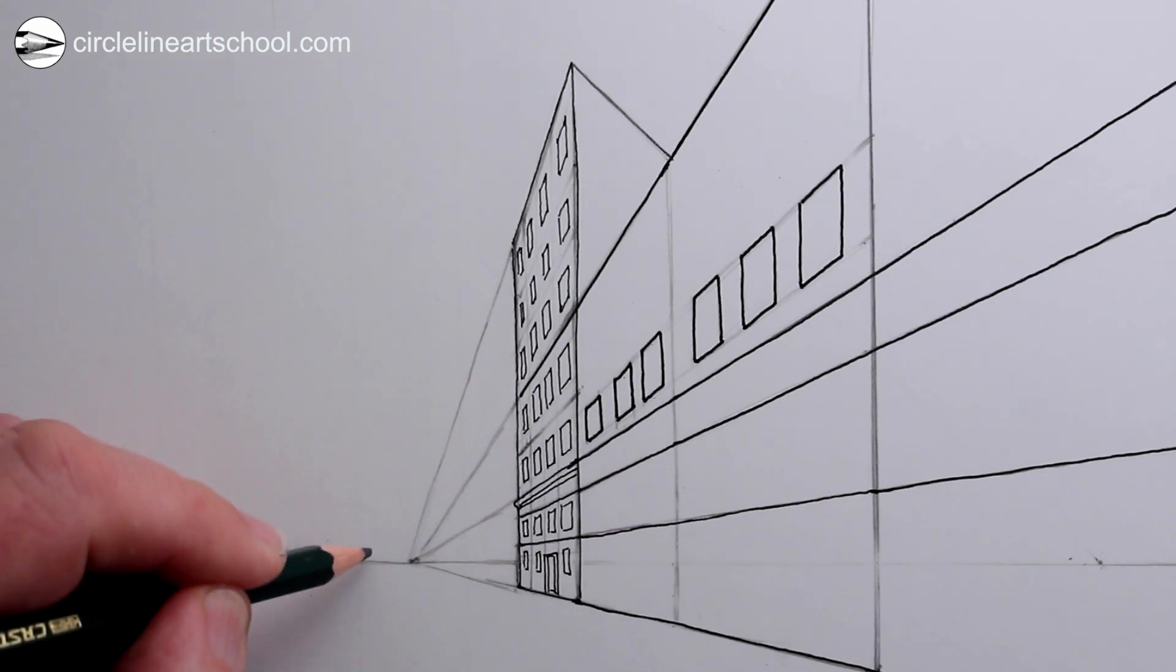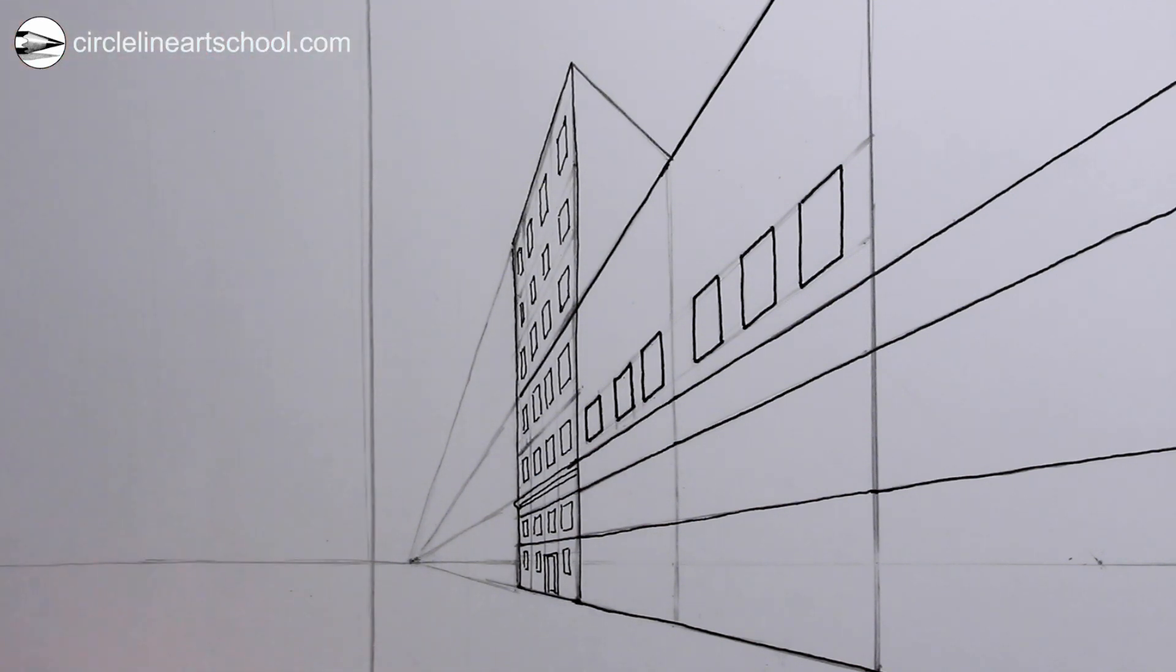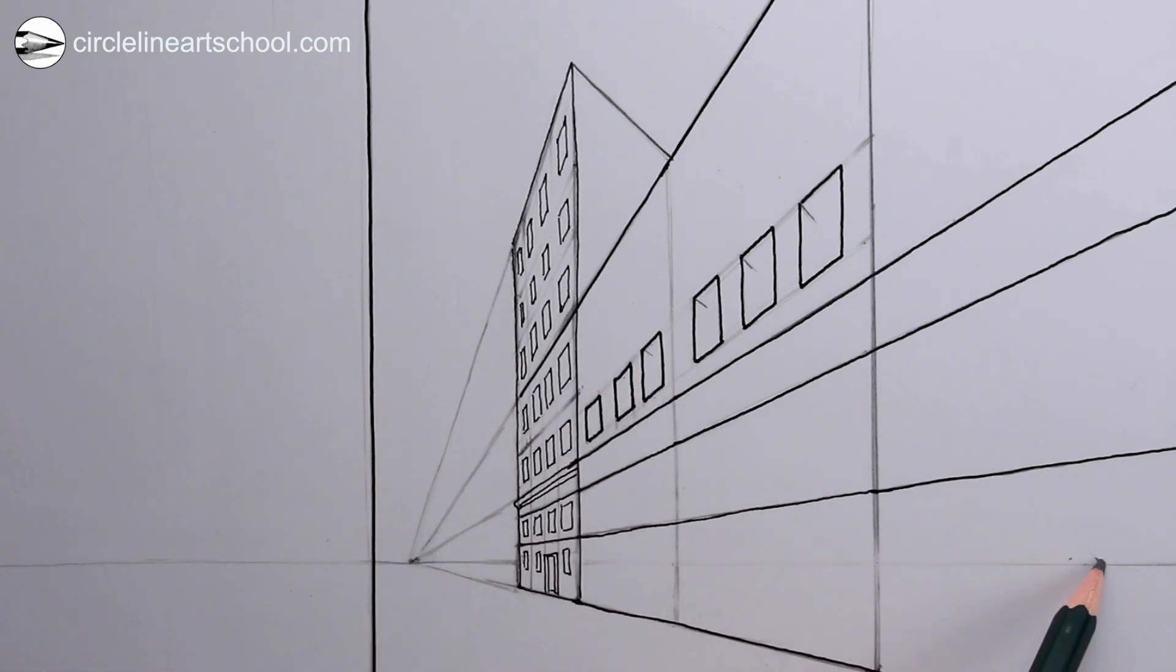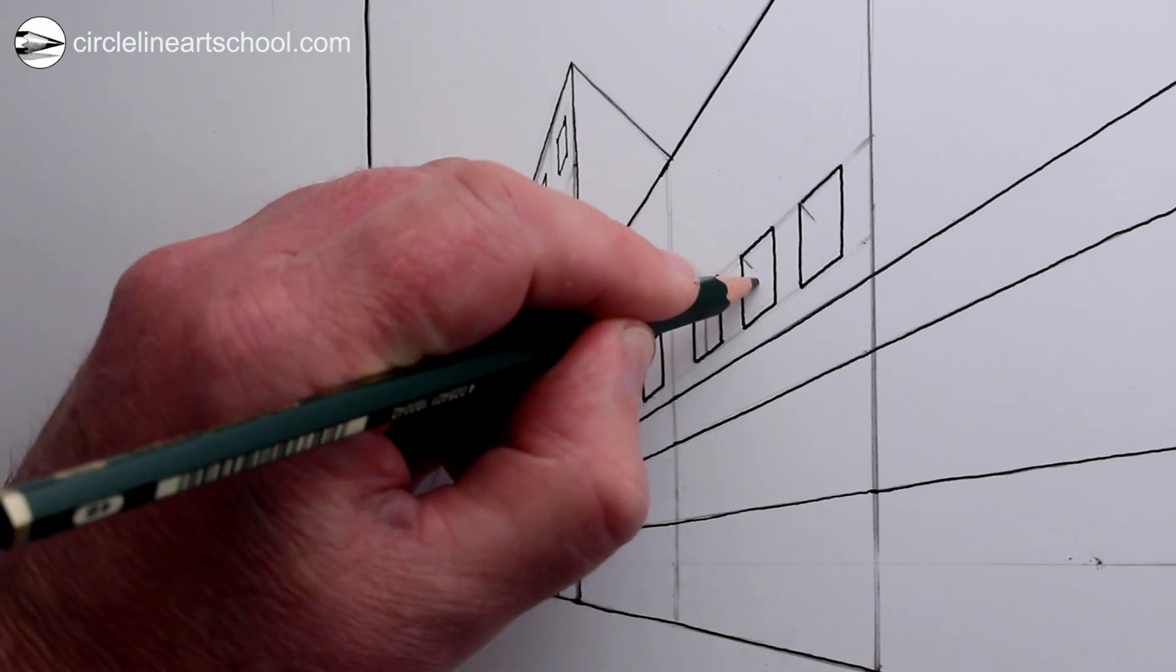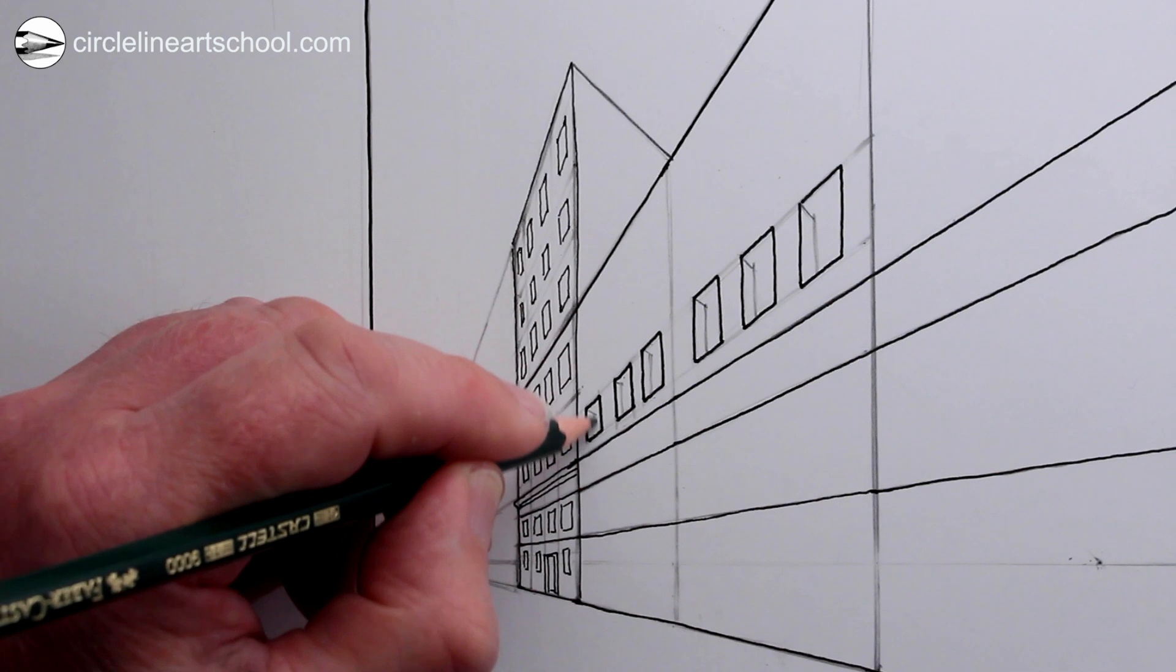On the left we could draw a vertical line to represent an edge of a building which is very close to us. We can also use the second vanishing point for the inside depth of the windows. That is why perspective can be a useful technique when drawing architecture.